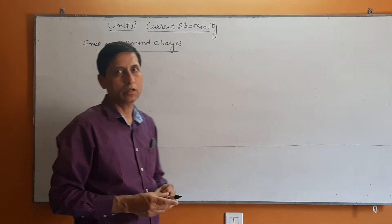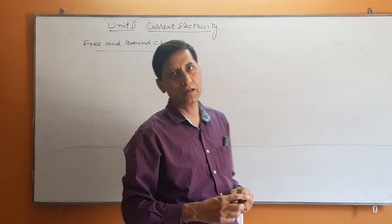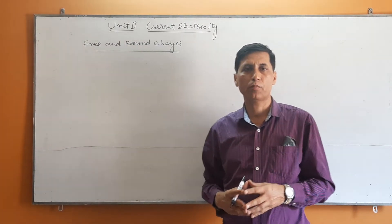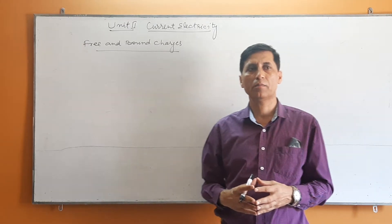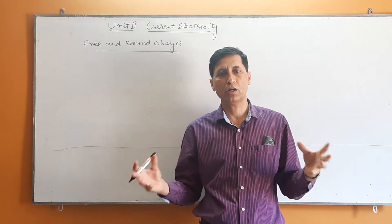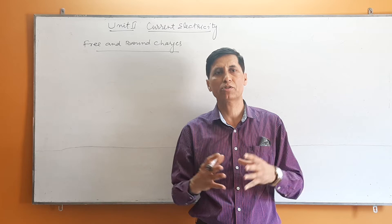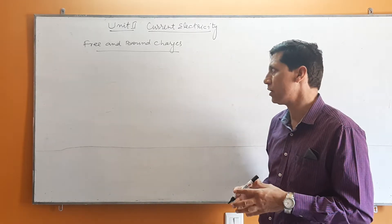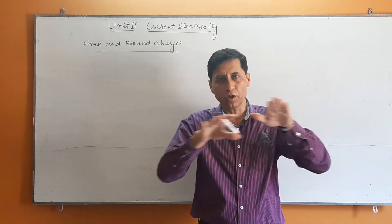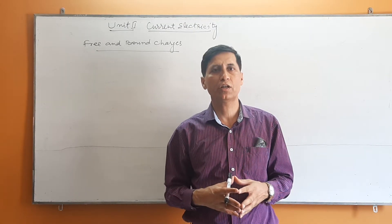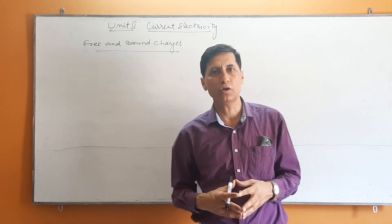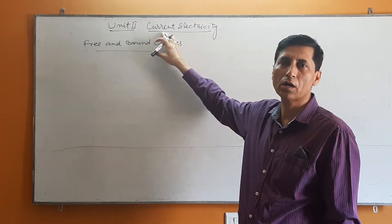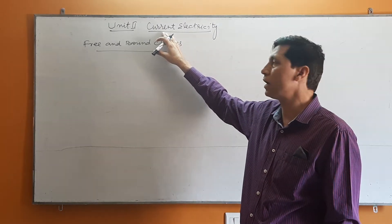Now we start the second unit, that is current electricity. In the first unit we have read about charge at rest — the properties of charge at rest, the electric field, electric potential, and capacitor. All these things we studied in the first unit where the charge remains stationary, that is electrostatics. When charge starts flowing through a conductor, it generates a current. Now we are going to study the flow of charge, which comes under current electricity.